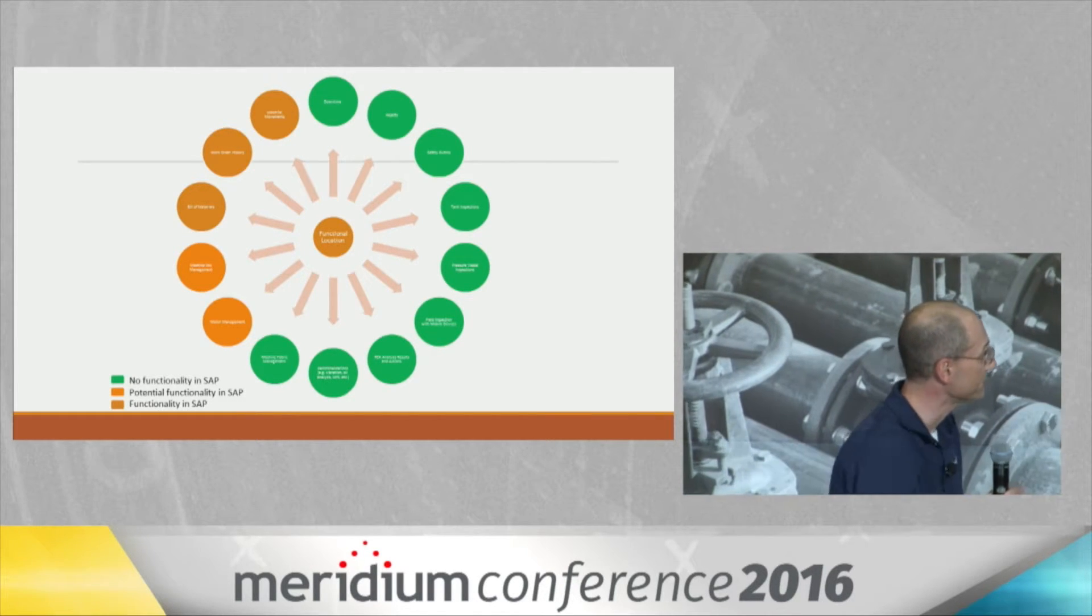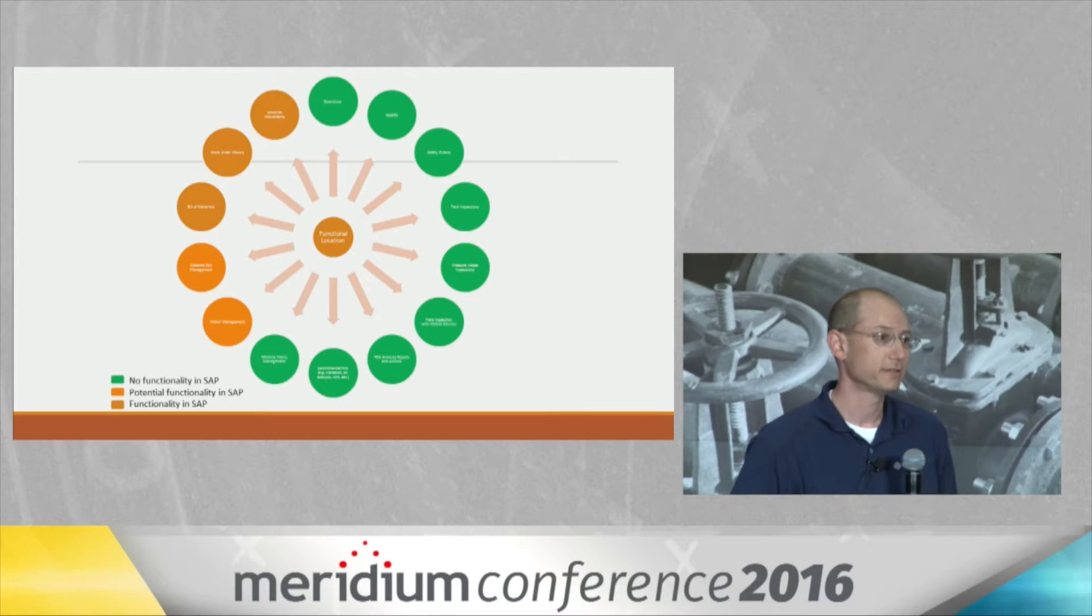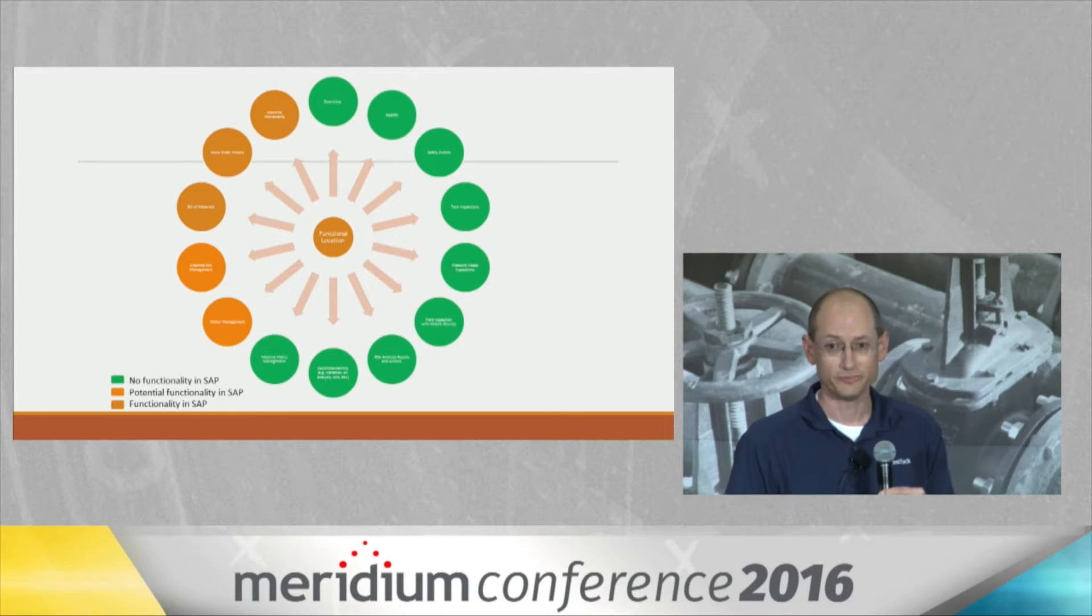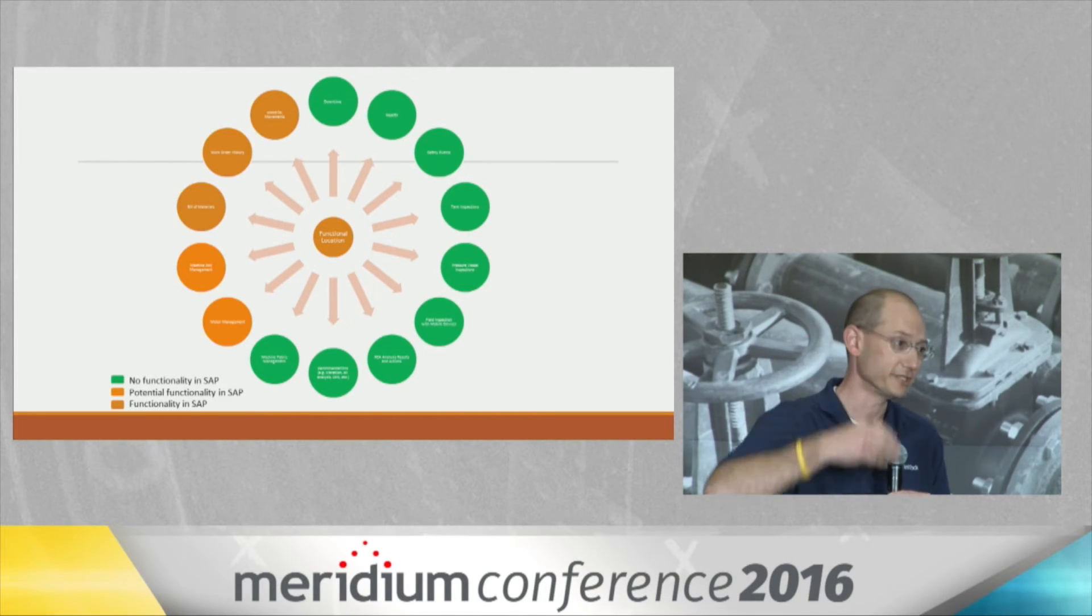So everything in green are things like downtime, root cause analyses, rejects, all those things. We want to relate those events to functional locations so that you can pull up a functional location in Meridian and see everything that's going on with that functional location.